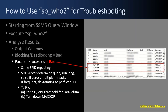A second thing to look for when you run SP_Who2 output is parallel processes, which are bad. The indicator you'll see is the same SPID repeating over and over inside SP_Who2. SQL Server does that when it determines a query is going to run long, so it splits the process across multiple threads. If that's happening frequently, it's devastating to performance, especially I/O. To fix that, you can raise the query threshold for parallelism or turn down MAXDOP. I'll put links to information about parallel processing in the YouTube description.